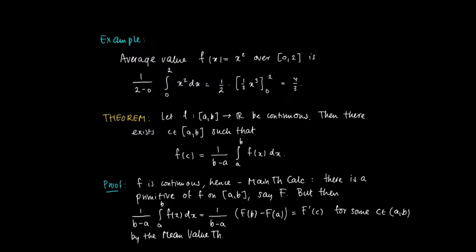But since F is a primitive of f, we know that F'(c) = f(c). Therefore, 1/(b-a) times the integral from a to b of f(x) dx equals f(c), so the average value of f over [a, b] equals f(c). This completes the proof.